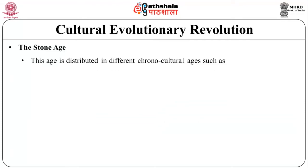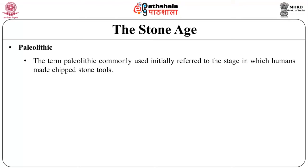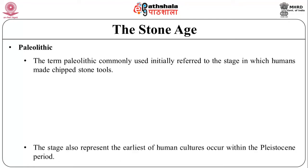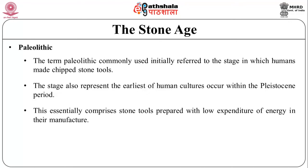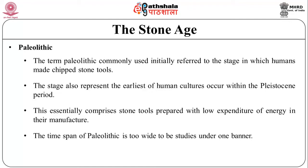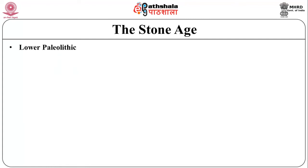The Stone Age is distributed in different chrono-cultural stages such as the Paleolithic, Mesolithic and Neolithic. The term Paleolithic, commonly used initially, referred to the stage in which humans made chipped stone tools. This stage represents the earliest human cultures occurring within the Pleistocene period. It essentially comprises stone tools prepared with low expenditure of energy in their manufacture. The subsistence economy at this stage is hunting and gathering. The time span of the Paleolithic is too wide to be studied under one banner, so it is further subdivided into three distinct phases as suggested by Lartet in 1870: the Lower Paleolithic, Middle Paleolithic and Upper Paleolithic.